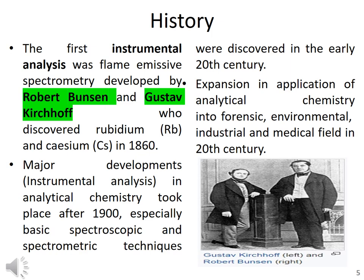Regarding the brief history of analytical chemistry, the first instrumental analysis was flame emission spectrometry, developed by Robert Bunsen and his colleague — the scientists who discovered rubidium and caesium in the 1860s. After that, major developments in instrumental analysis took place after 1900. If you look in your laboratory, you will find HPLC — high performance liquid chromatography — and GC — gas chromatography — which are state-of-the-art instruments developed after 1900.